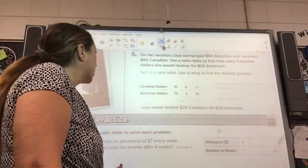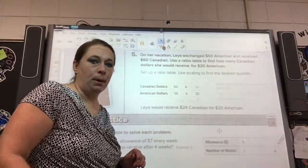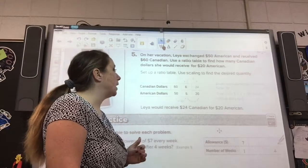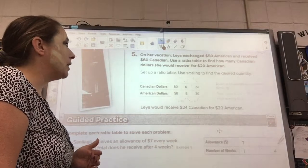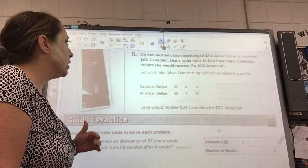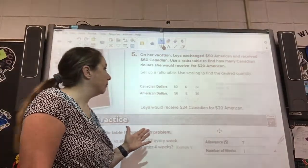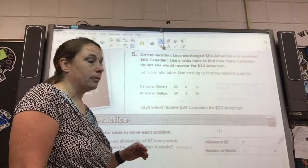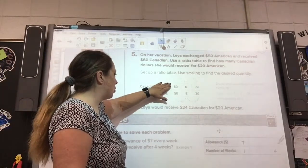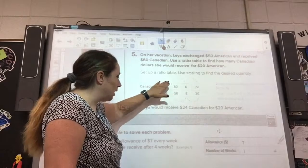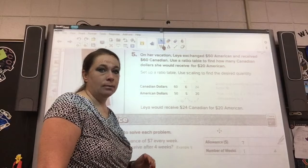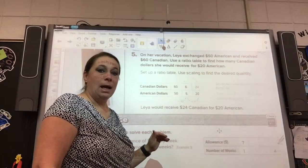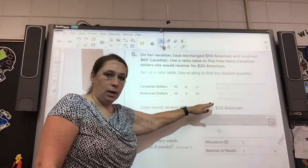All right. We are going to work on this guided practice. Before we get started, there is one more problem up here that is an example for us. And it talks about vacation. Layla exchanged $50 American money, and she received $60 in Canadian. Use a ratio table to find out how many Canadian dollars she would receive for $20 in American. So they have set that up for us. And we show $60 in Canadian, $50 in American money. Then over here, they put the $20 in American.